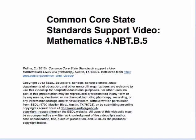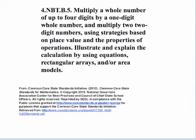This is Common Core State Standards Support Video in Mathematics. The standard is 4.NBT.B.5. This standard reads, multiply a whole number of up to four digits by a one-digit whole number and multiply two two-digit numbers using strategies based on place value and the properties of operations. Illustrate and explain the calculation by using equations, rectangular arrays, and/or area models.